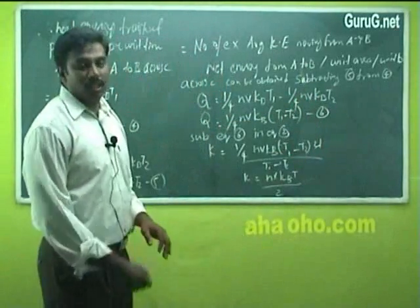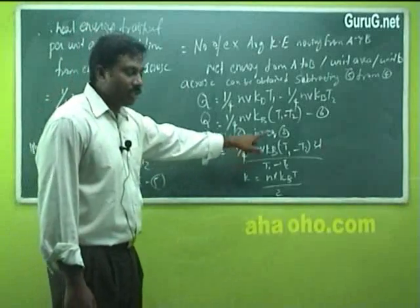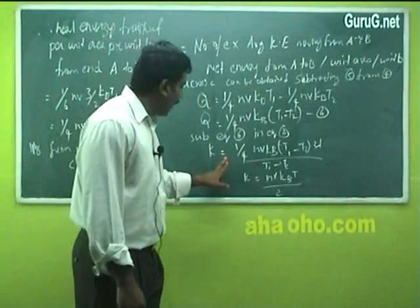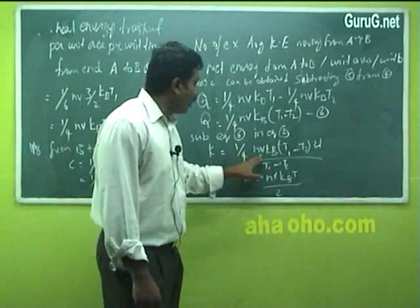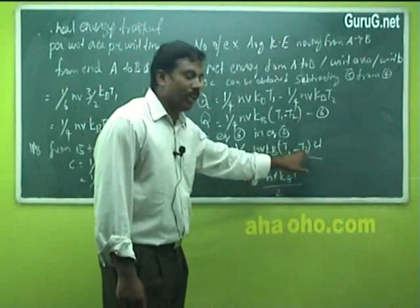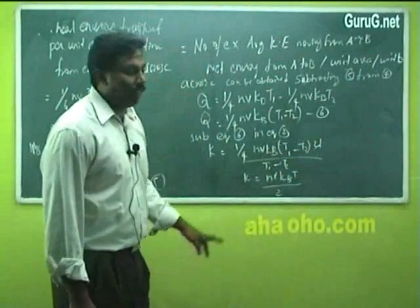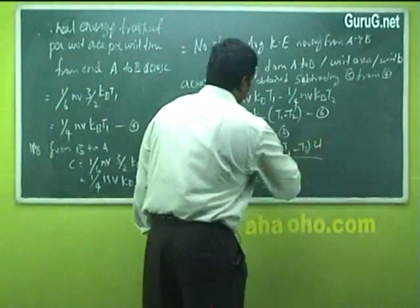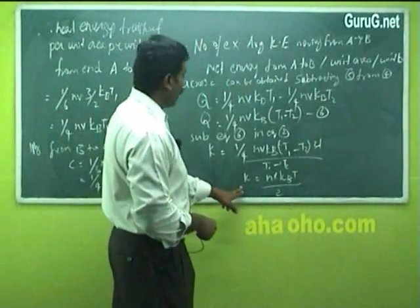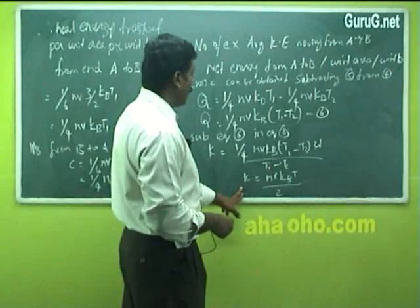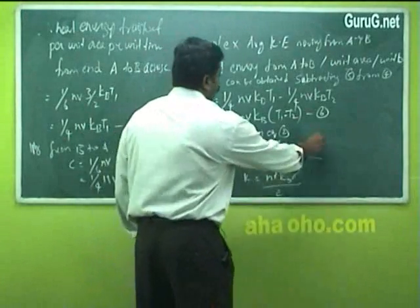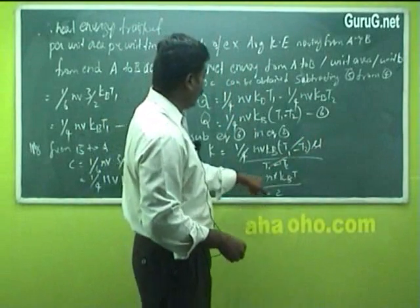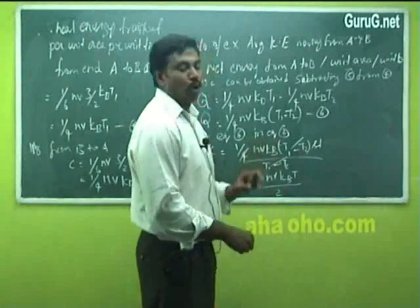Substituting equation 6 in equation 2, the thermal conductivity K = (1/4)NV·KB·(T1 - T2)·2λ divided by (T1 - T2). The (T1 - T2) terms cancel, and the 2s cancel, giving the thermal conductivity K = NV·KB·λ / 2. Wait — simplifying: the net kinetic energy gives K = NV·KB·T·λ / 2, where the numerical factors cancel.